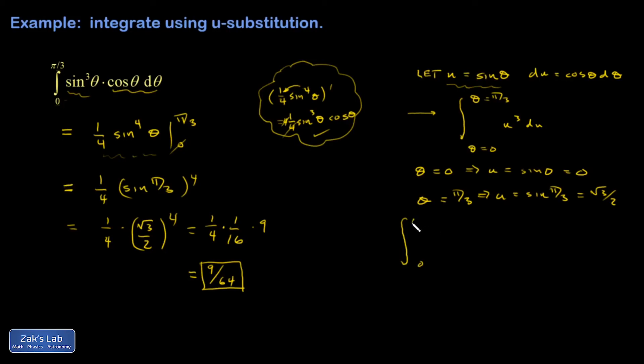The integral is u goes from zero to root three over two of u cubed du. Easy guess. One-fourth u to the fourth evaluated from zero to root three over two. And I end up with one-fourth root three over two to the fourth, which is exactly what I got last time. And that simplifies to nine-sixty-fourths.